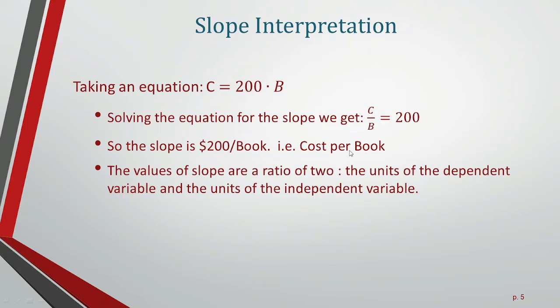Solving the equation for the slope: C/B = 200. From the equation, it is clearly seen that the slope is 200, and the cost per book is also 200.